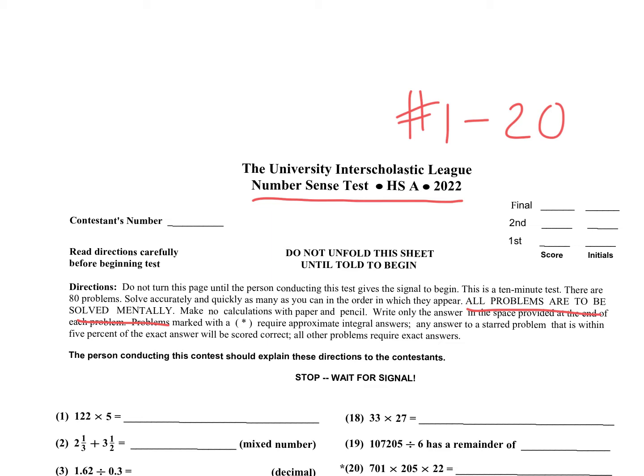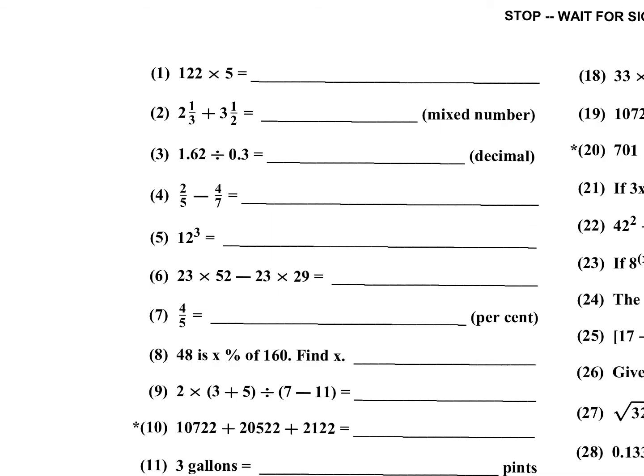Number 1: 122 times 5. I would multiply — 5 times 2 is 10, write a 0 and carry 1, 5 times 12 is 60 plus 1 is 61. So you don't have to do it digit by digit. Number 2: one-third plus one-half is 5 over 6, because 2 over 6 plus 3 over 6 equals 5 over 6.